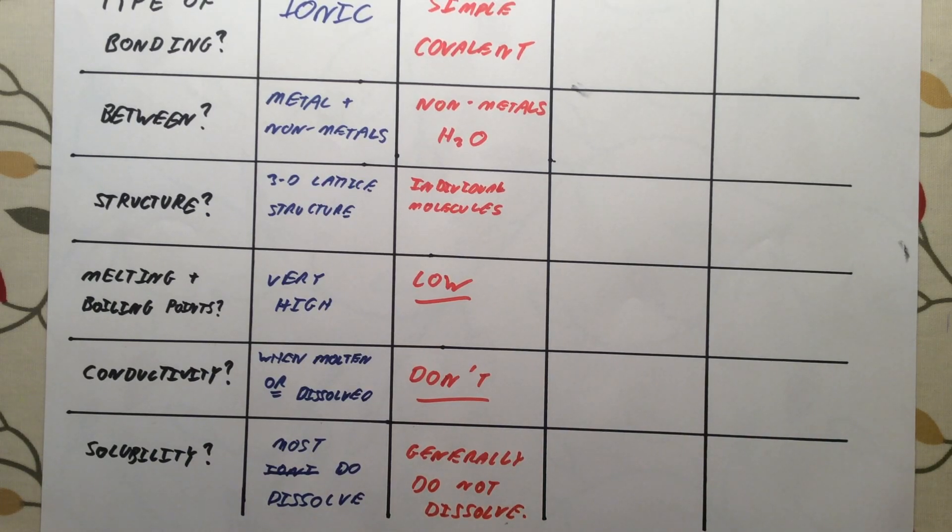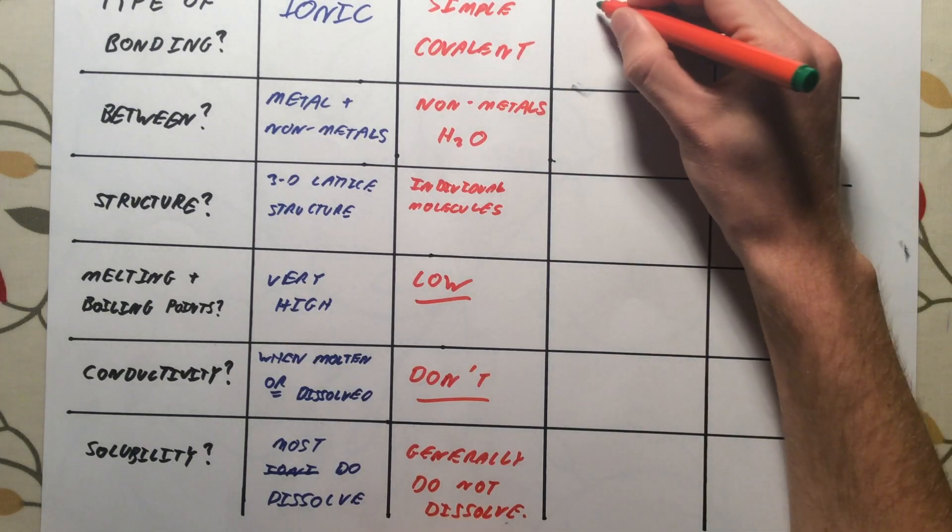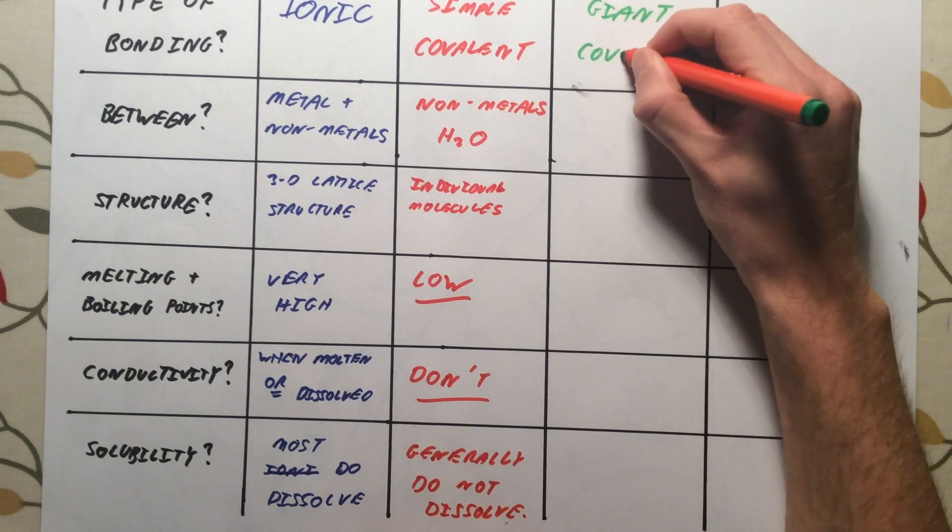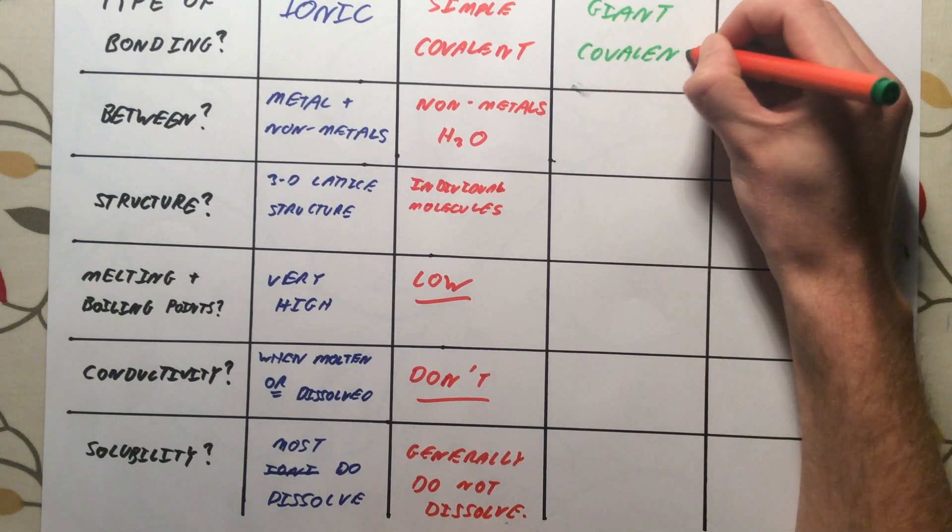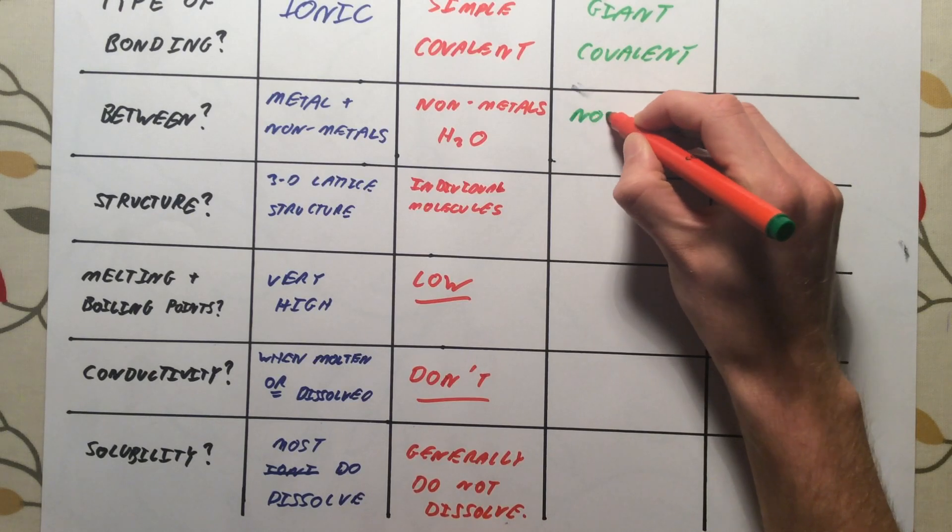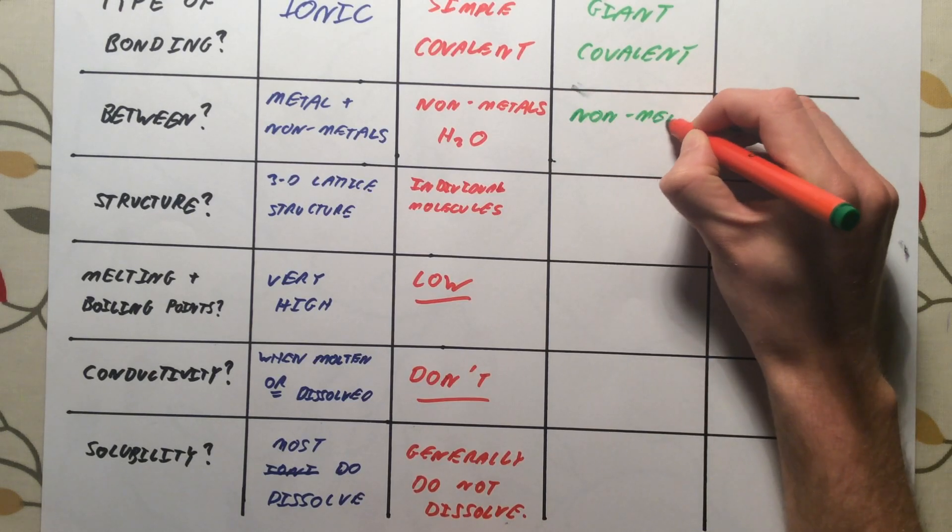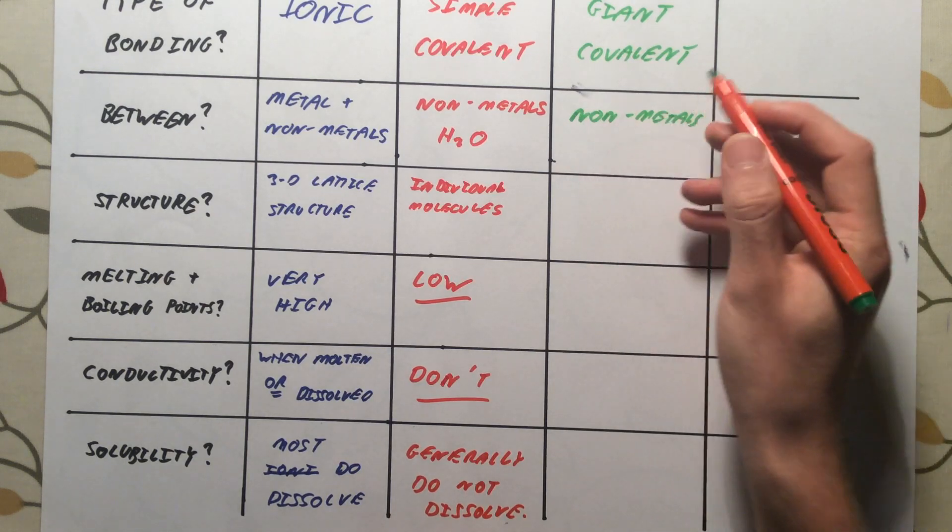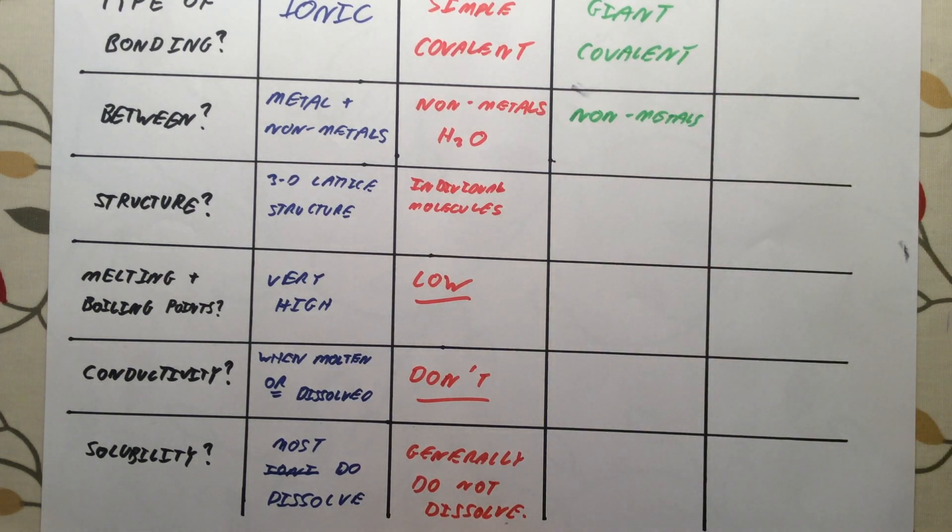Third type of bonding we need to talk about is giant covalent. And again, this is going to happen between non-metals. For example, diamond and graphite are both made of carbon atoms. They're both different forms of carbon. They are non-metal atoms.